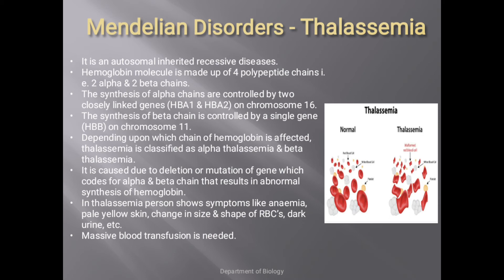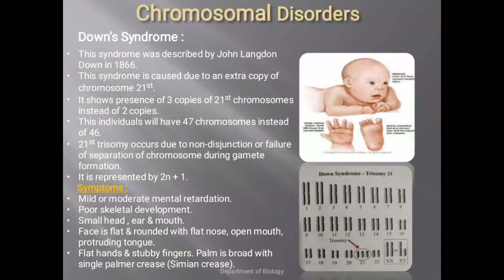Thalassemia is caused due to deletion or mutation of the gene coding for alpha or beta chains, resulting in abnormal synthesis of hemoglobin where one chain may be larger and another smaller. Symptoms include anemia, pale skin, changes in size and shape of RBCs, and dark urine. These patients require massive and frequent blood transfusions, which is one of the biggest problems associated with this disease.